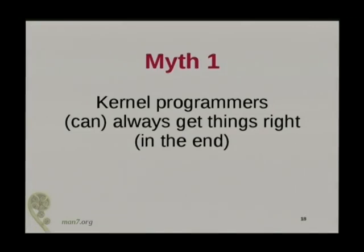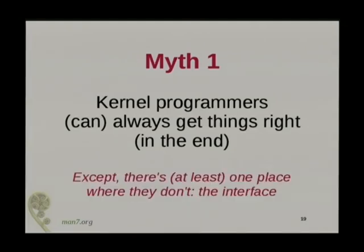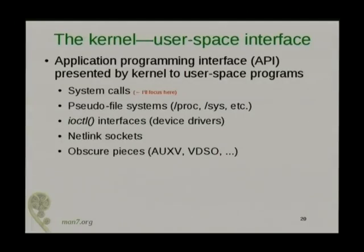The first myth: kernel programmers always get things right, in the end. But there's one place that they can't, and they don't — and that is the interface between the kernel and user space. What I mean by this is things like system calls, proc/sysfs file systems, ioctl interfaces, Netlink sockets, and a few other more obscure pieces of interface that the kernel presents to user space. I'm going to talk mainly about system calls for my examples.